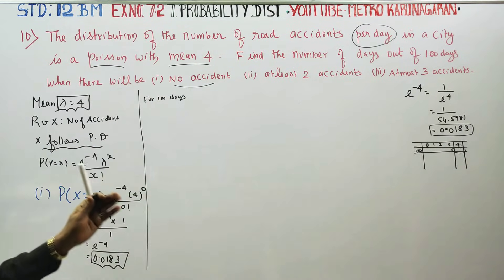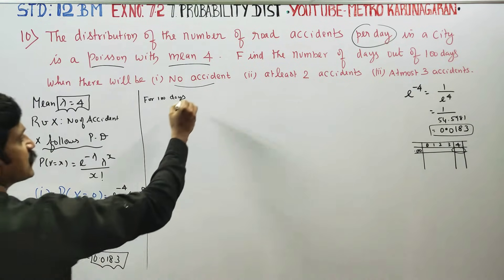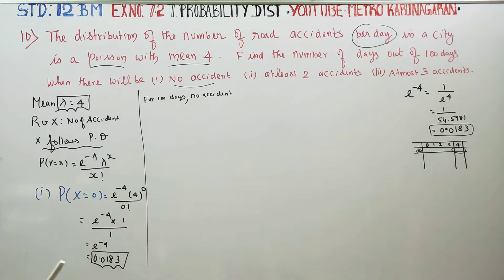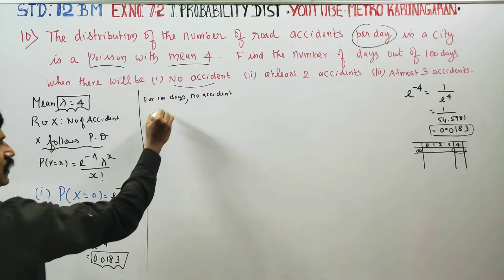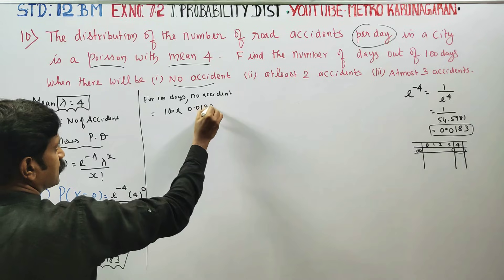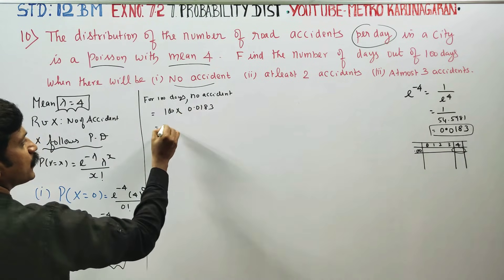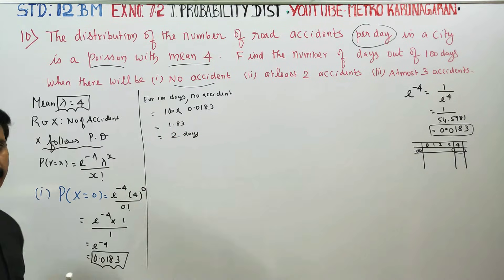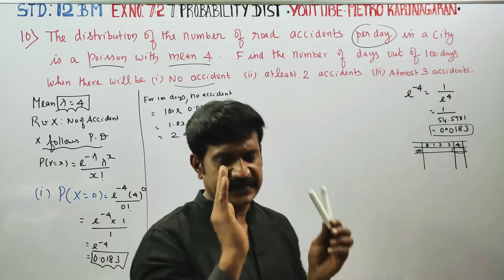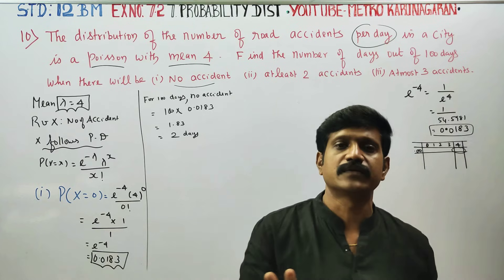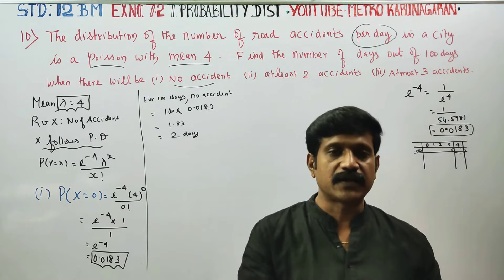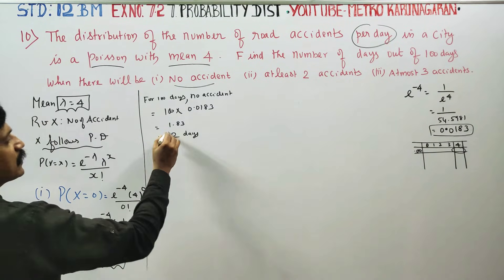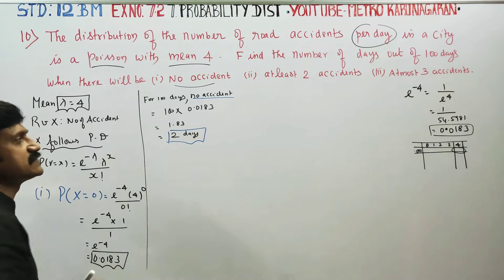The question asks for the number of days out of 100 days that there will be no accident. For 100 days, the number of days with no accident is 100 multiplied by P(X=0), which is 100 into 0.0183, giving approximately 1.83, which rounds to about 2 days.